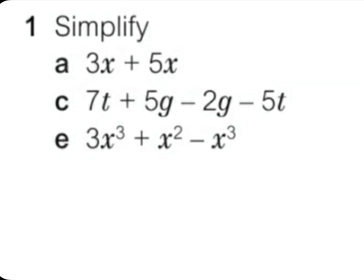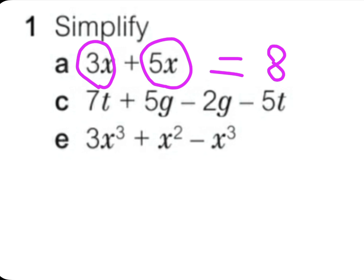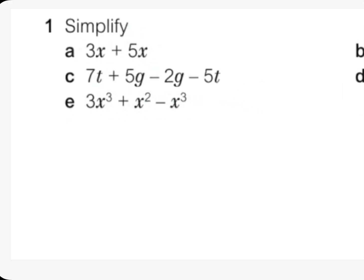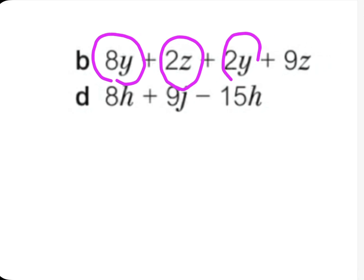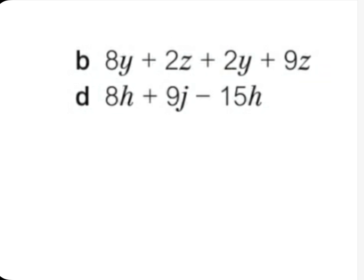It's like seeing three apples plus five apples, so the answer will be eight apples — which is 8x. Now let's move on to the next question, question B. In question B we have 8y, 2z, 2y, and 9z. Here we have two variables: y and z.